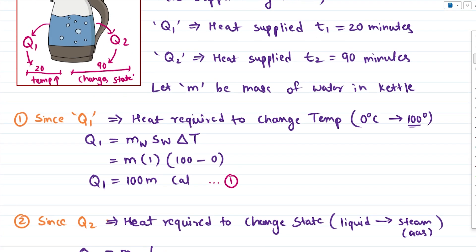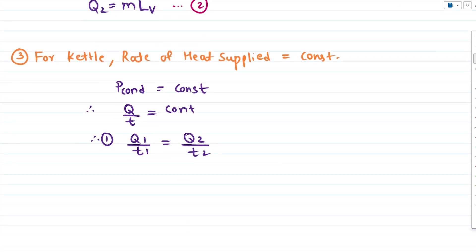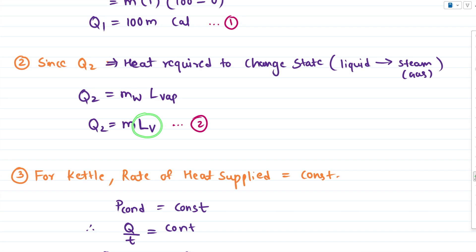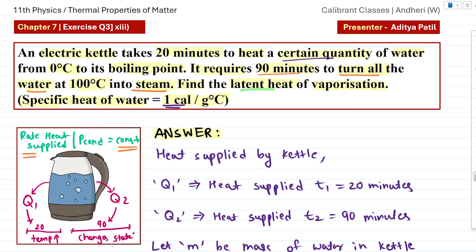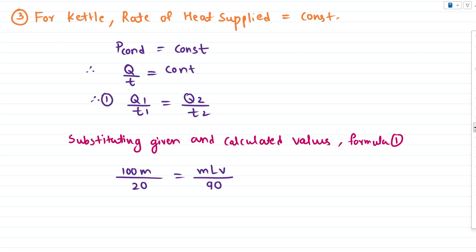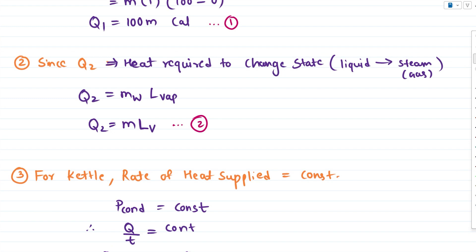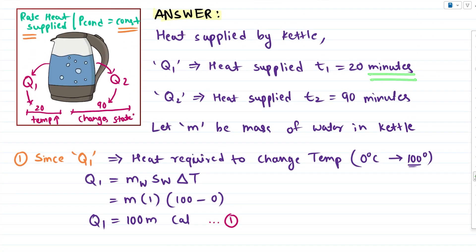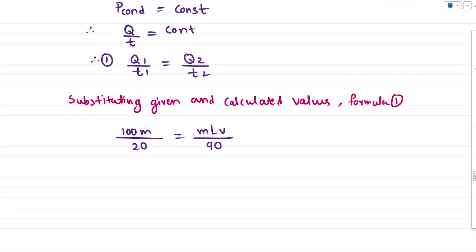Now if we substitute T1 and T2 time stamps that is 20 minutes and 90 minutes, and if we substitute this, we get an expression where we have one unknown term that is LV. So to calculate the latent heat of vaporization, let's substitute all the values. Substituting given and calculated values in formula 1. We get Q1 discovered to be 100 times m and T1 was 20 minutes. Q2 was m times the latent heat of vaporization and T2 was 90 minutes.